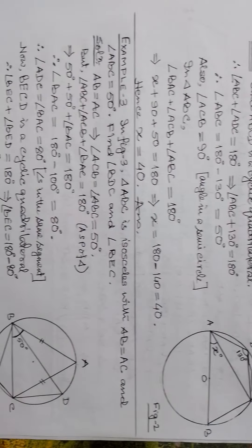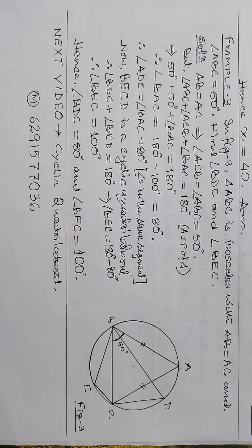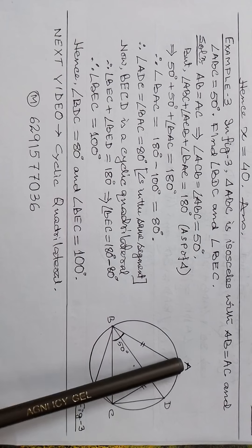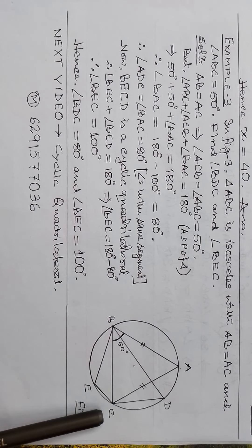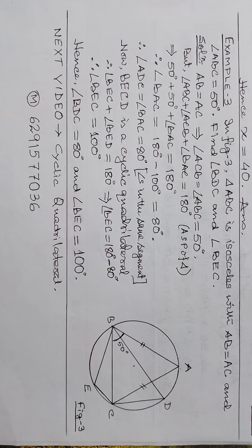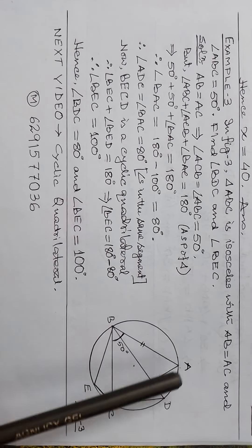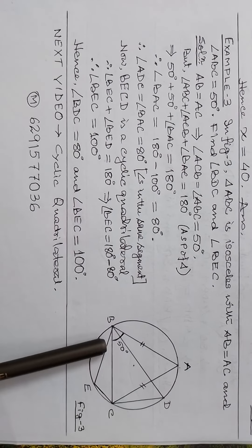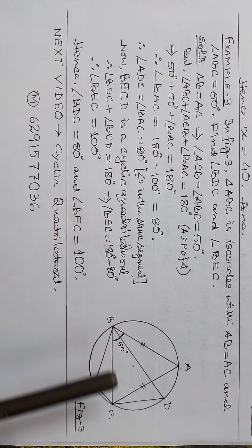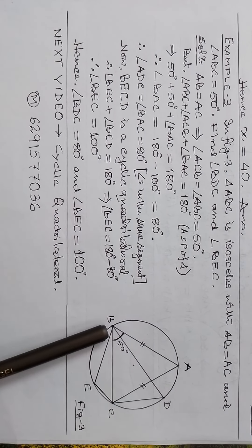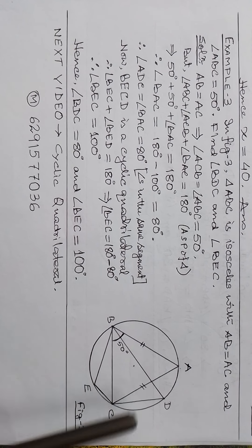Next, in figure 3, triangle ABC is isosceles with AB equal to AC, and angle ABC equals 50 degrees. Find angle BDC and angle BEC.